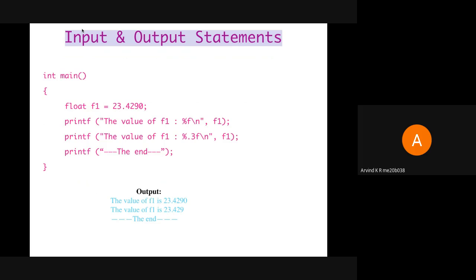Sometimes we don't want to print the value of any variables, but we just want to print a sentence. In that case, we can skip the variable part and just write the format string part with the sentence in it. For example, in the third printf, we have just mentioned the text within quotes and that gets printed.